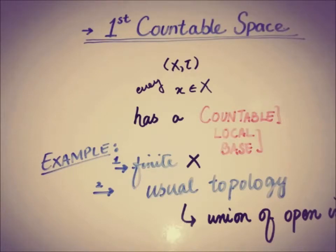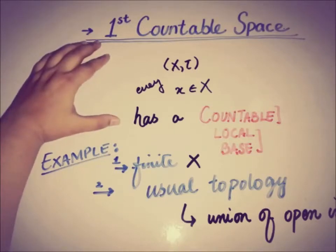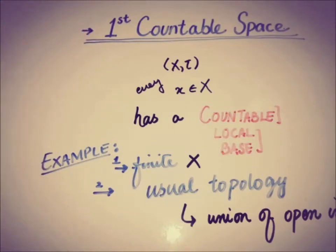So in this video we have discussed the definition of the first countable space - that every space is first countable space if every element of the set X has a countable local base. So there are two main words here: first is countable and the second is local base. And two examples are discussed.